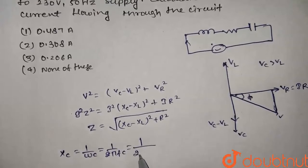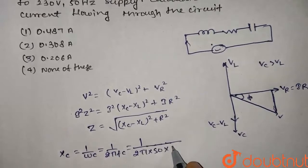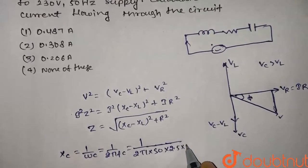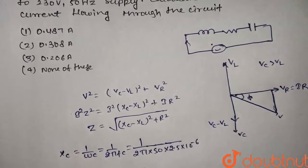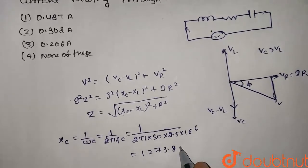Putting values: 2 pi times 50 times 2.5 times 10 to the power minus 6, which equals 1273.88 ohm.